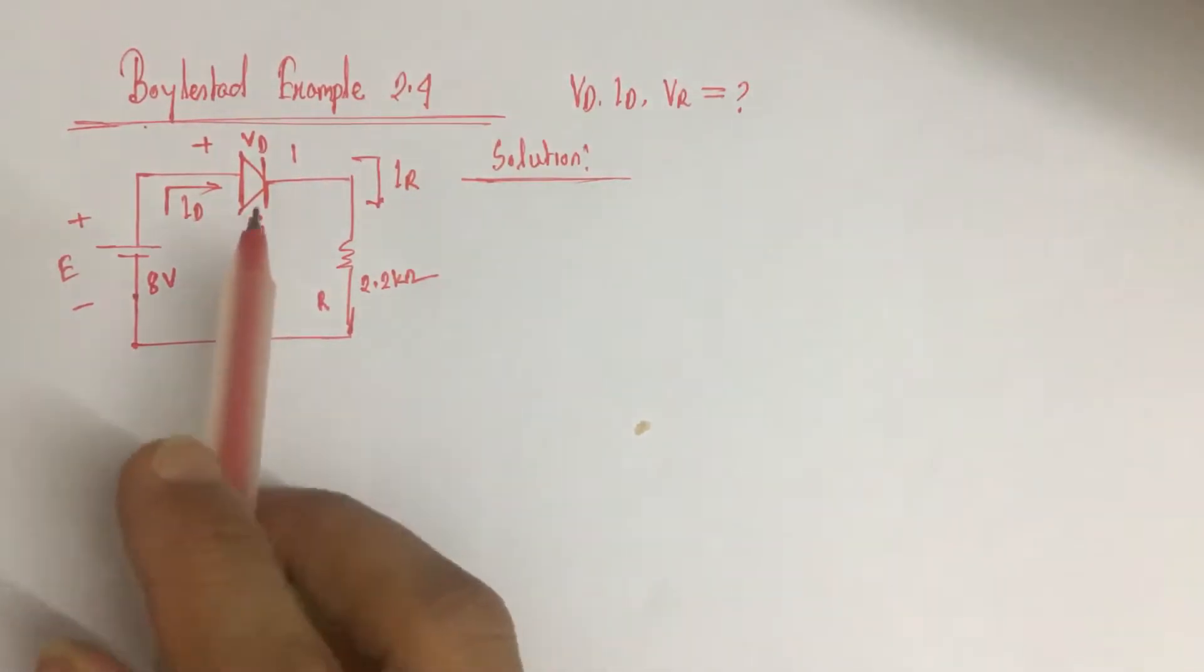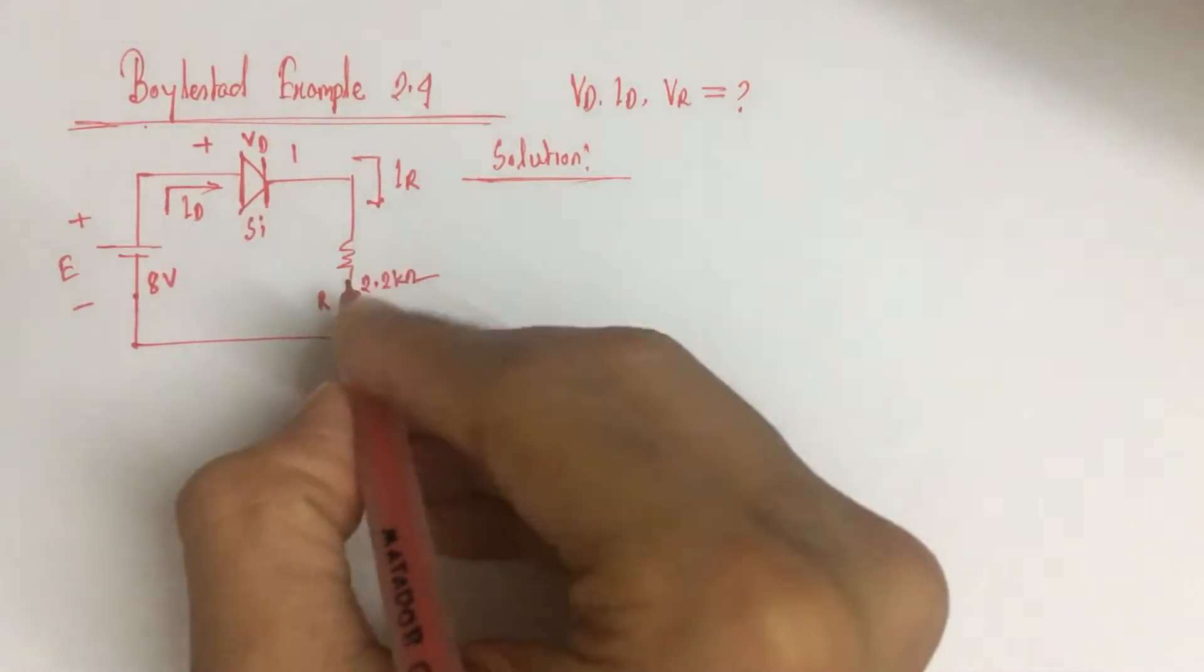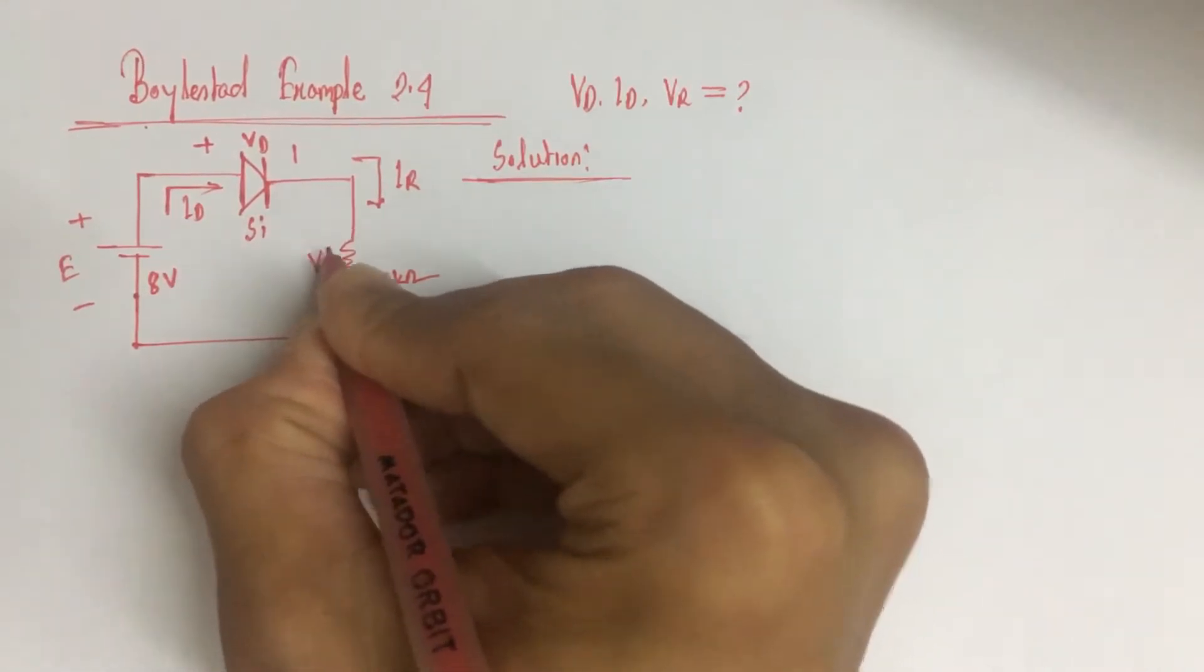Here we have to identify the voltage VD across the silicon diode, current ID through this diode, and the voltage VR which is the voltage across this 2.2 kilo ohm resistance.